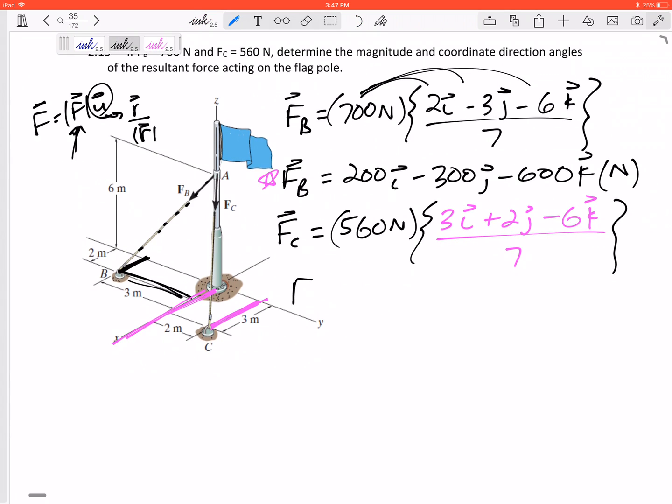So this one written in its component form would be 240 in the I plus 160 in the J minus 480 in the K, units are Newtons. Let me not box that in, let me put a star by that.